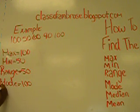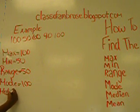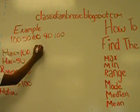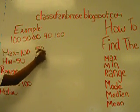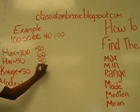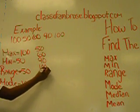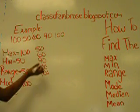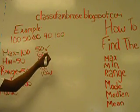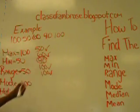Next is our median. This is where we write them in order, and we cross them off. So 50 and 100 are crossed off, and 90 will be our median.